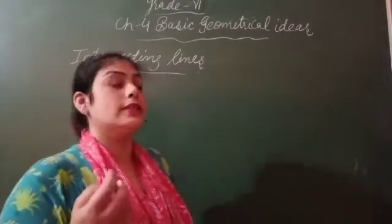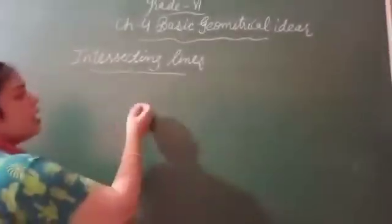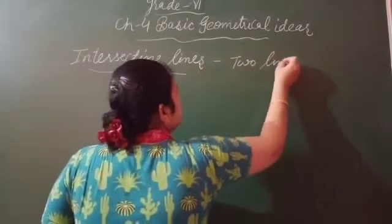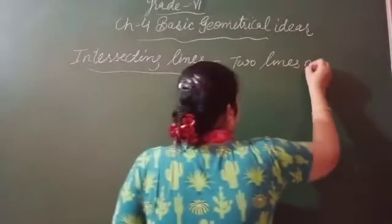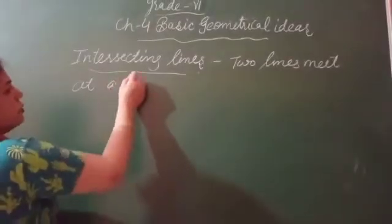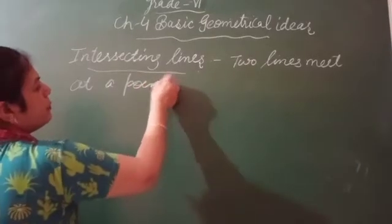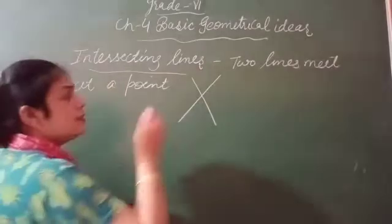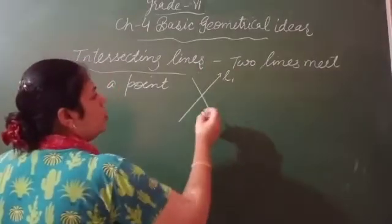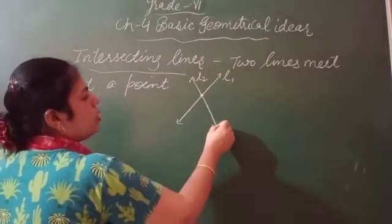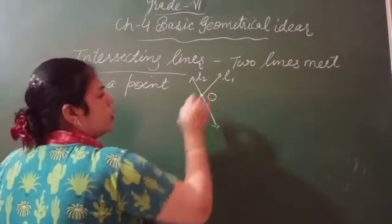Now we discuss intersecting lines. Intersecting lines: when two lines meet at a point. So like this, these are called intersecting lines - line L1 and L2. These two lines meet at a point O.